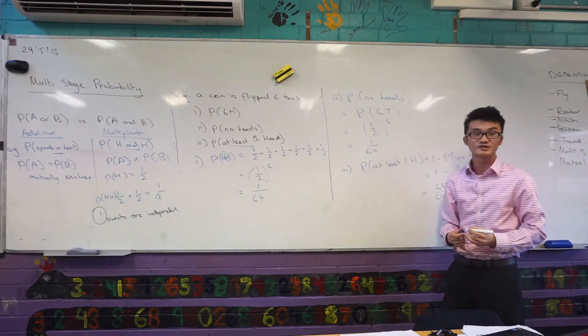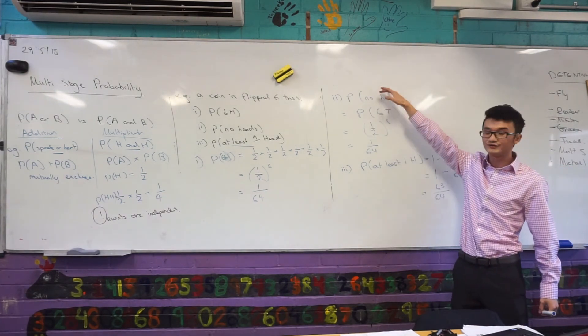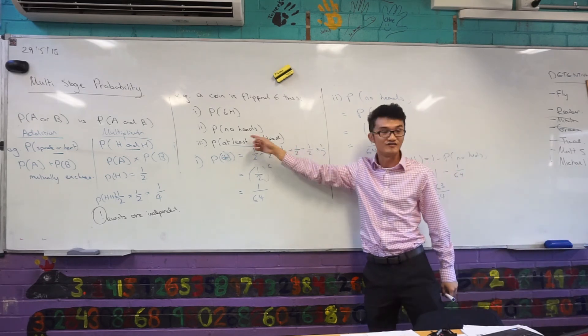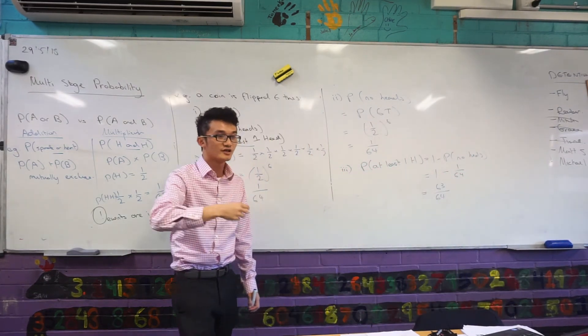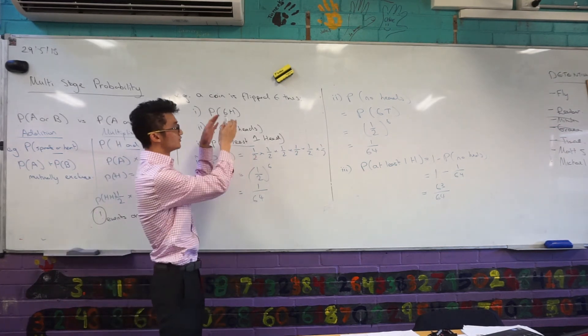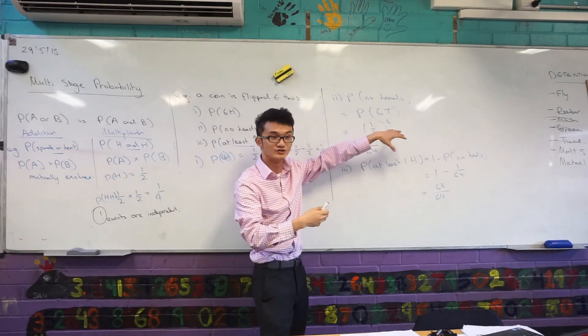So, can you see how sometimes they'll try and lead you into these questions? They'll help you out by saying, find the probability of no heads, and then find the probability of at least one head. And this is why I want you to be really confident about knowing when to use which principle. So, don't overcomplicate the question, but know when you can use which principle.